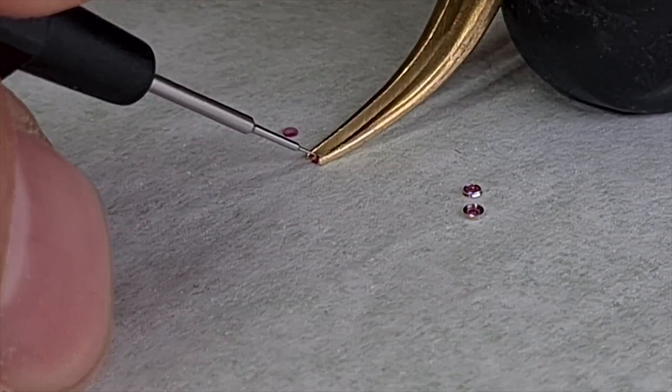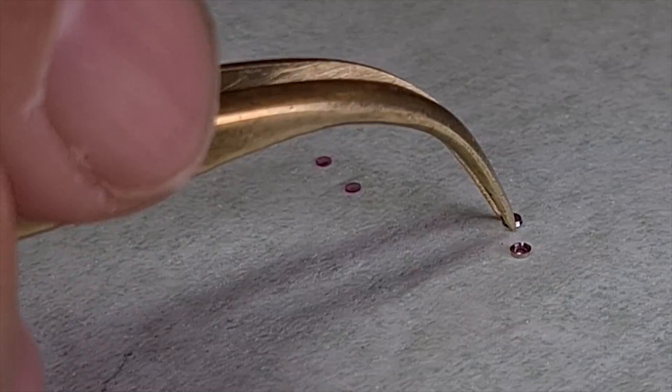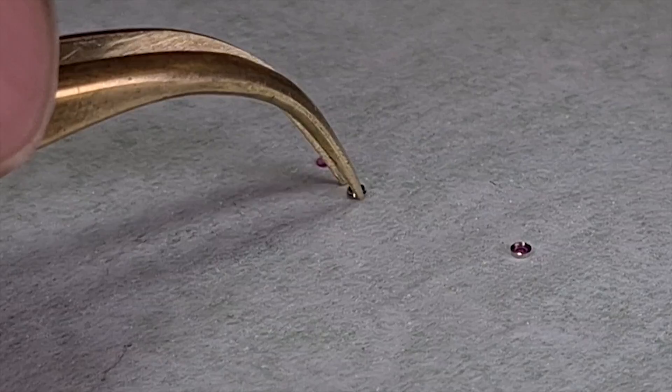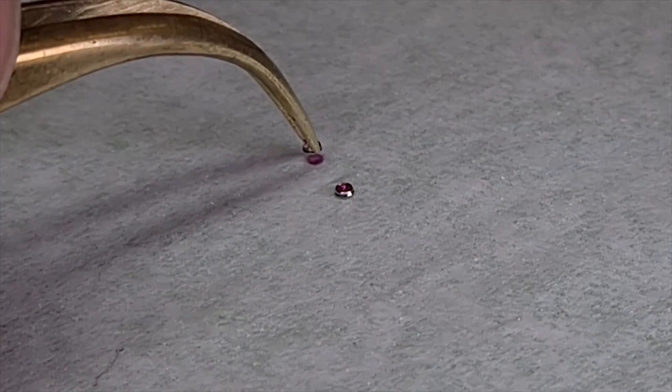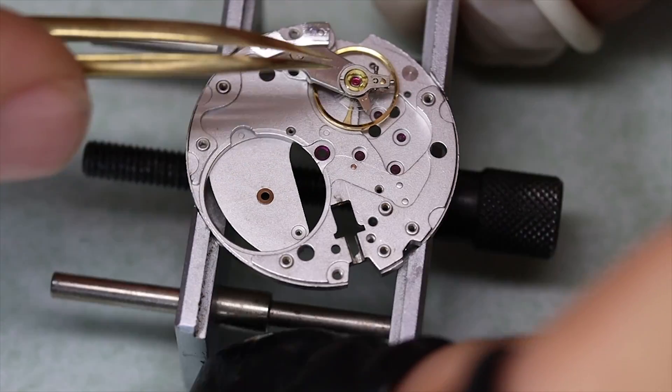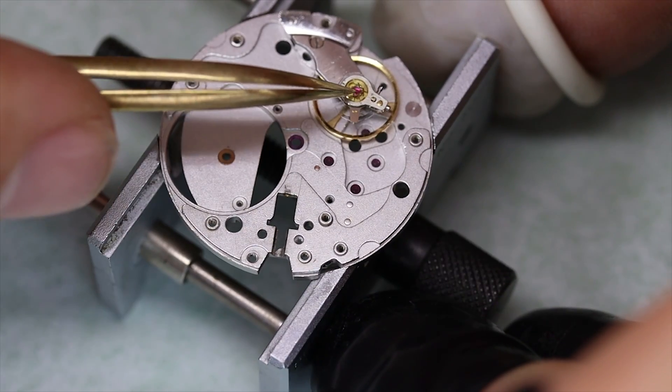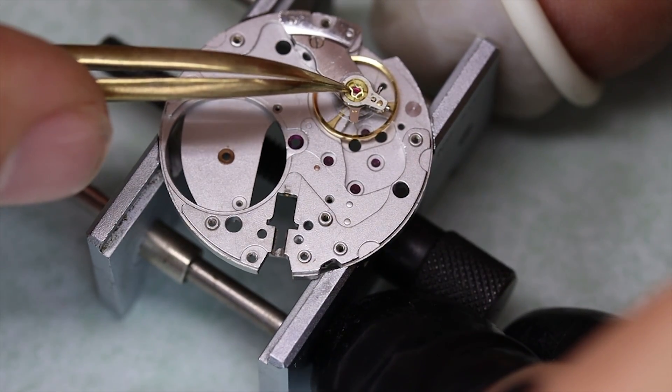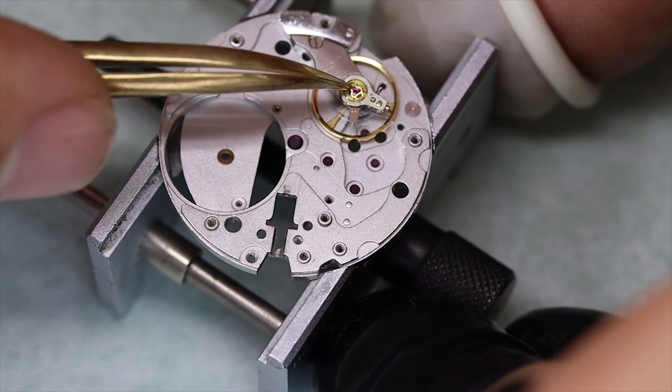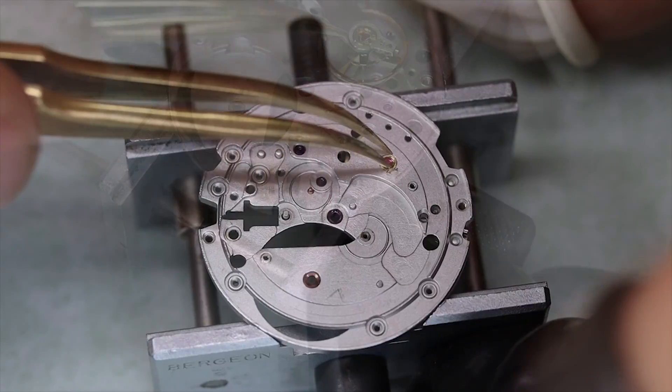We're putting a small drop of 9010 in the center and then we're putting the chatons back on top. These shock settings are very similar to the Incabloc but I believe they're the KIF ultraflex, which was quite common on some watches back then.